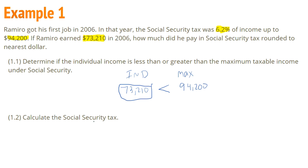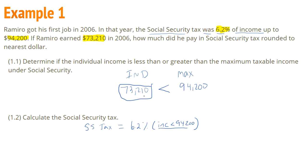Now we're going to calculate the tax. The formula is given in the problem — the social security tax was 6.2% of the income up to $94,200. So we can write: social security tax equals 6.2% of the income that is less than $94,200, which we know is $73,210.